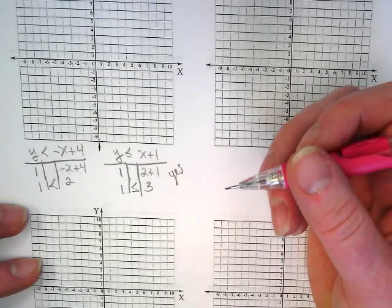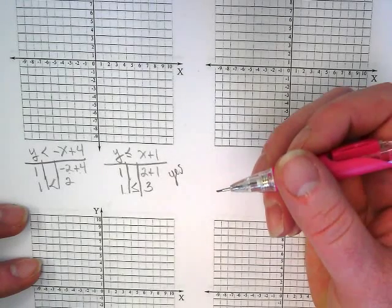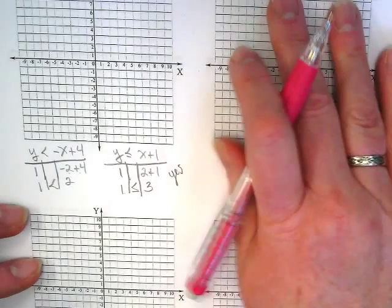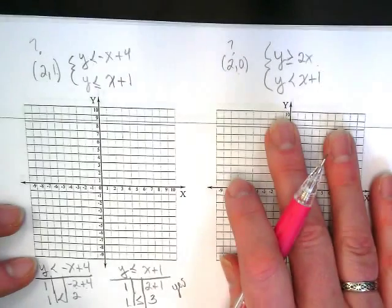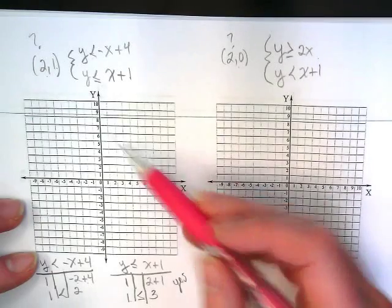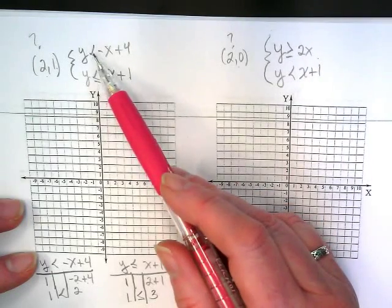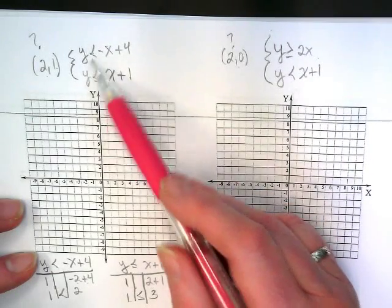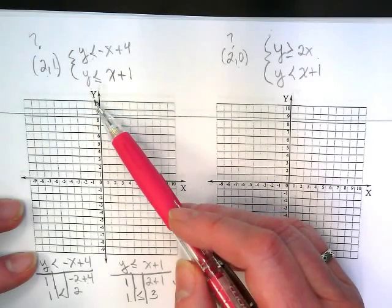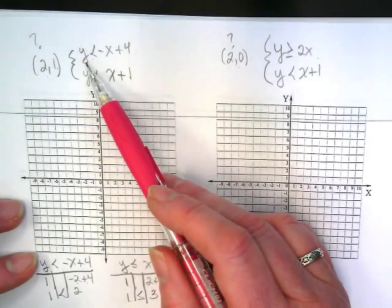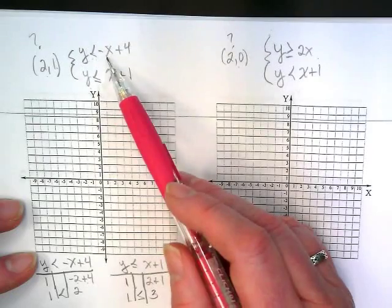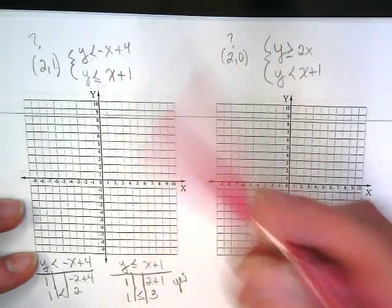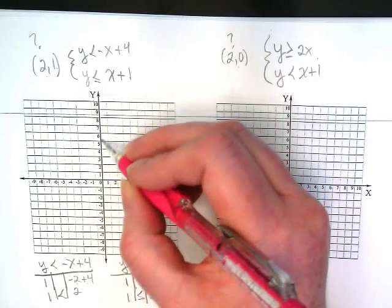Now we're going to take our graphing skills and show why it works. And this is just one ordered pair that could be a solution to these. So first thing we want to look at, thinking back to our list, are these both in y equals mx plus b form? Yes. So y is less than negative x plus four. We're going to start with the plus four. So take your pencil and let's graph it.